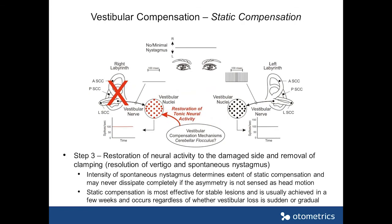After a few more days, perhaps a week or two — depending on age, activity level, and other factors — you reach a point where neural activity on the intact side is restored to its baseline level, the clamping is removed, and neural activity on the damaged side has come up to the pre-lesion level at the vestibular nuclei site. At this time the asymmetry has essentially disappeared, spontaneous nystagmus has become minimal, and the patient does not have symptoms as long as the head is still.